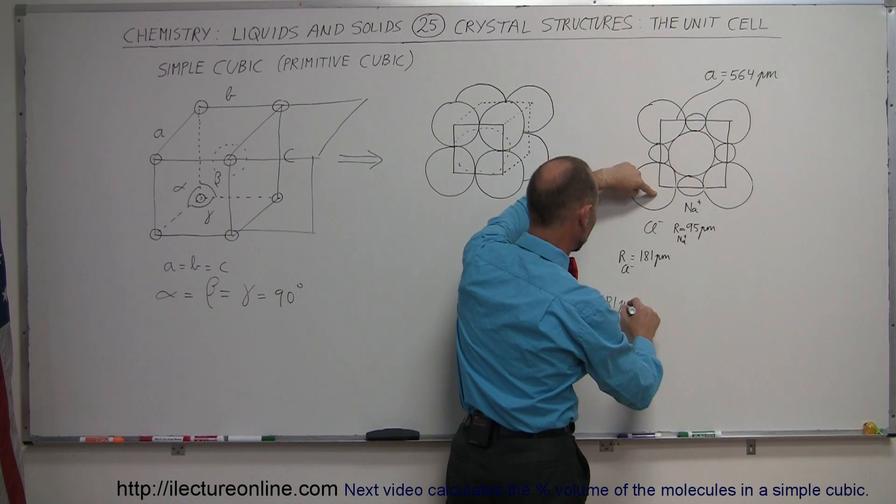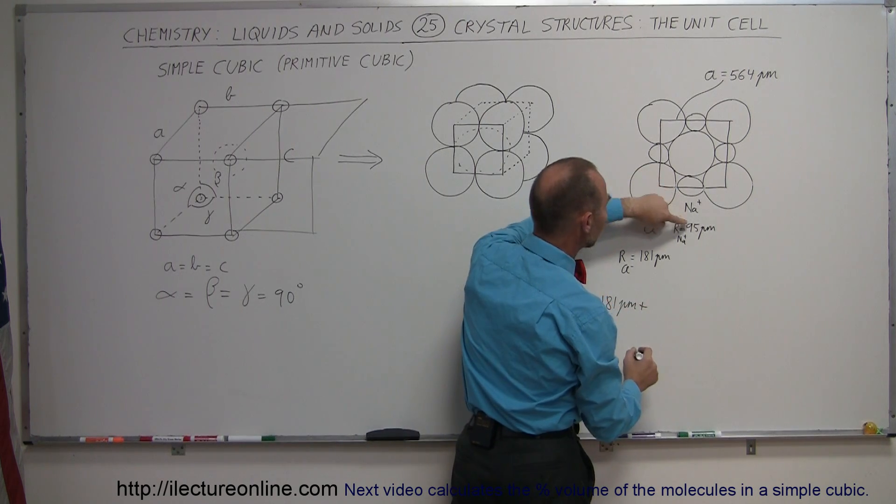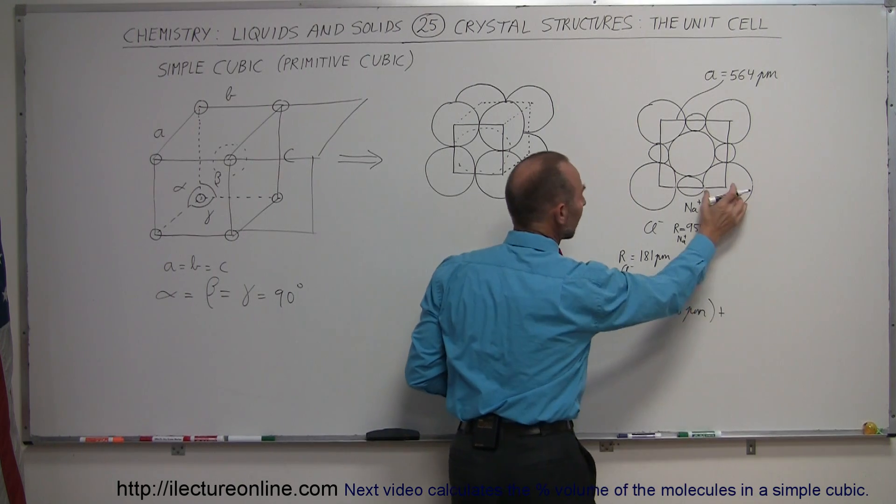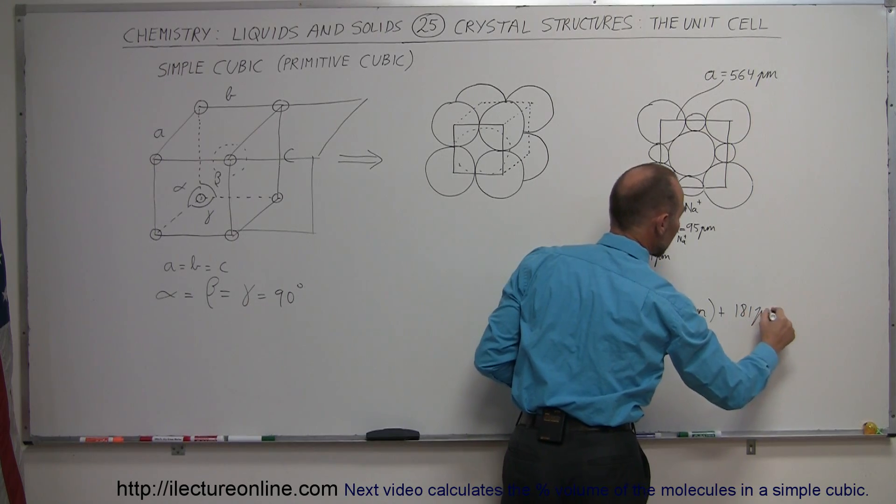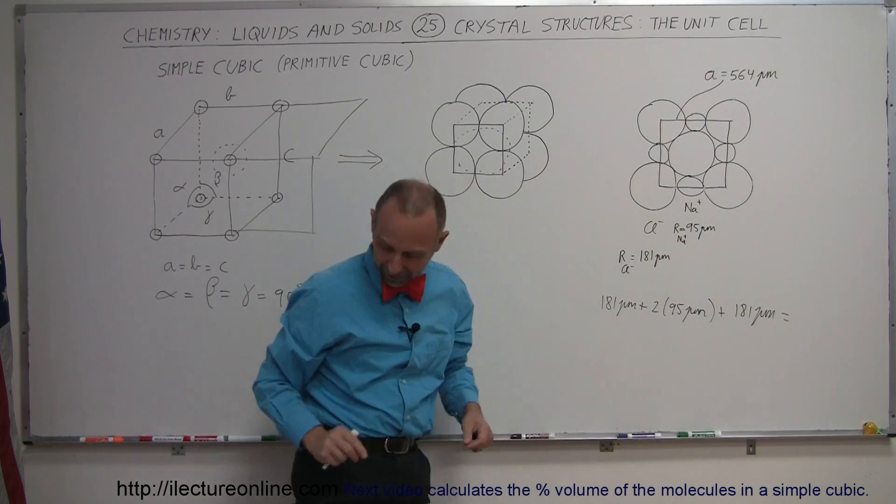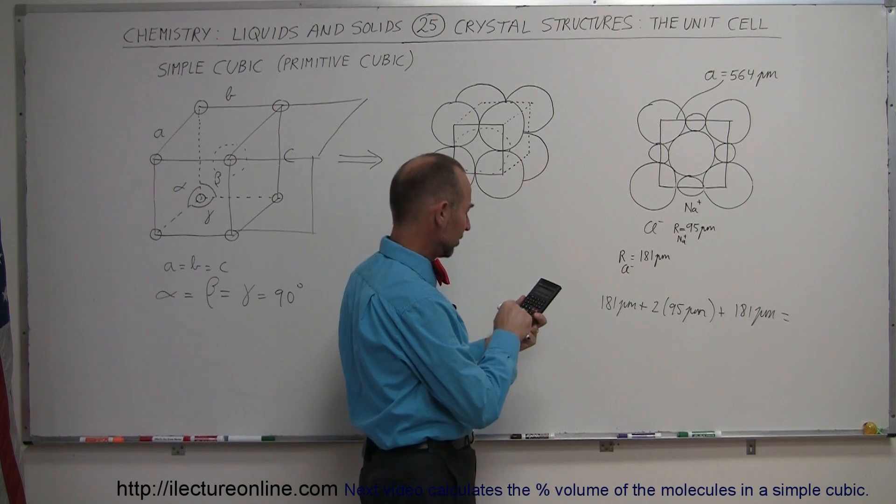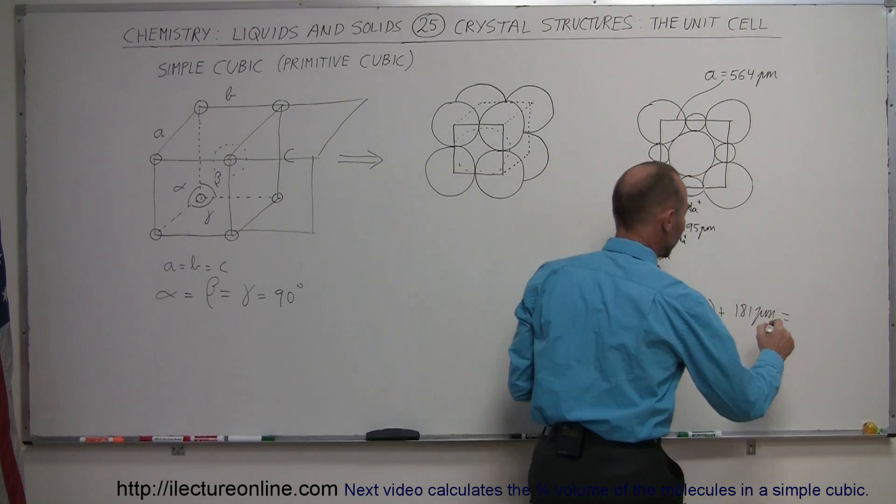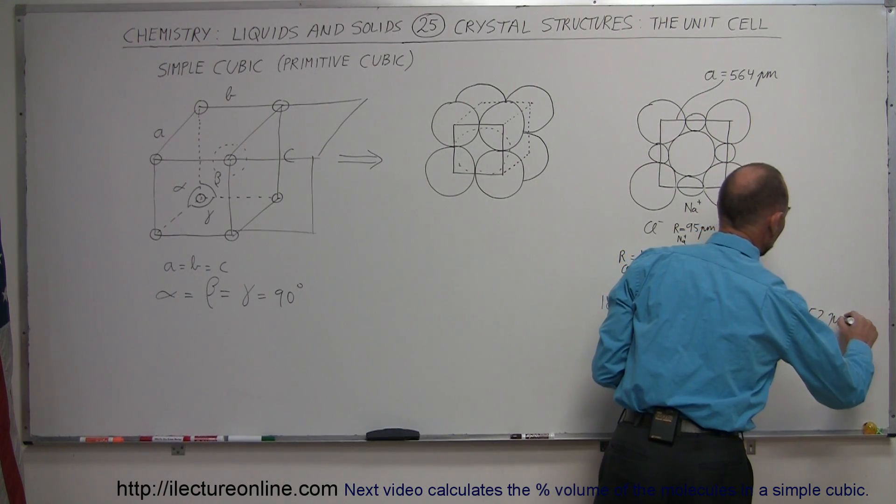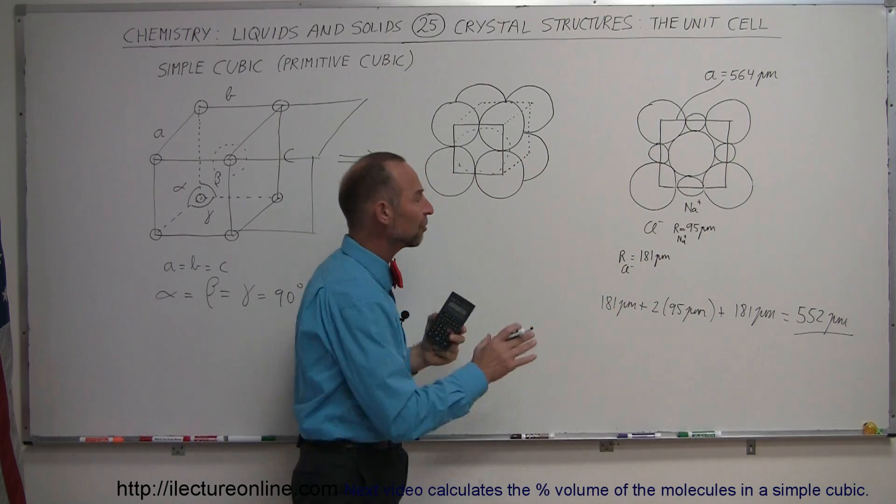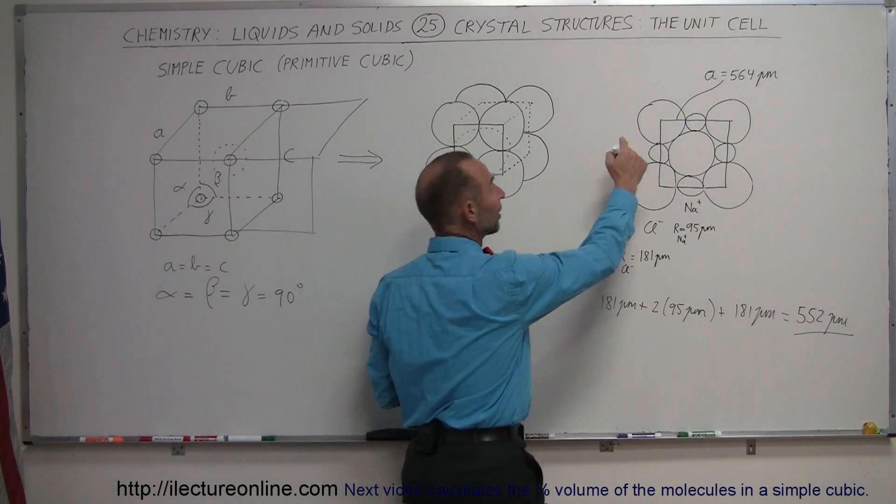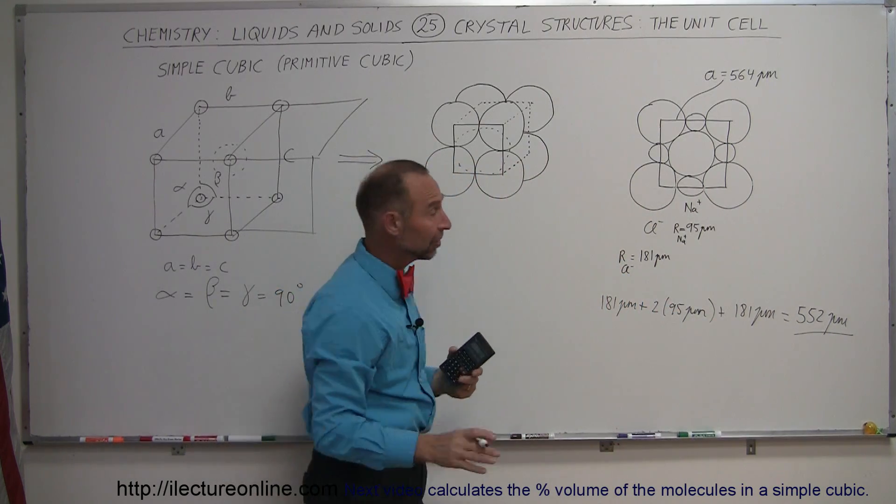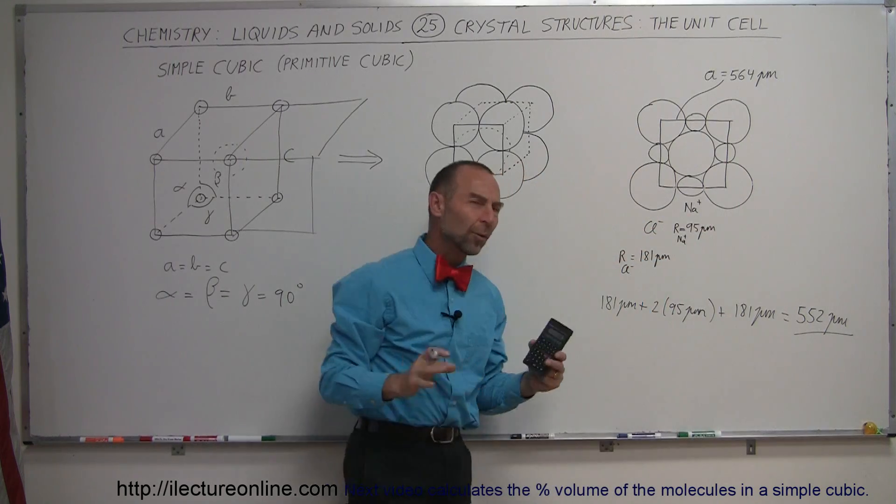So here we have 181 picometers for this one, plus twice 95, plus 2 times 95 picometers, plus then again 181 picometers from that one. And let's see, I have a calculator right here, let's take a quick check here. 181 times 2 plus 95 times 2 equals, that would be a total of 552 picometers. So from simple calculation and knowing the average size of these ions, you'd expect the unit cell in this case to be 552 picometers on each side. In actuality, it's a little bit more, it's 564 picometers. So why the difference?